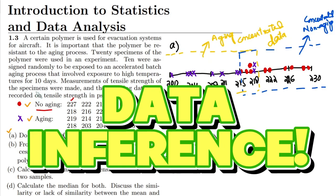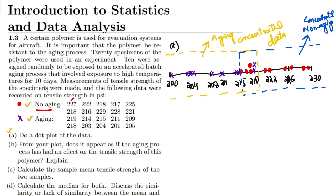Welcome back guys. This is again question 1.3. Previously we have seen the dot plot of our data, which is in the form of non-aging and aging samples of a certain polymer. This is the data, and in part a we have not only plotted it but I also explained the aging process, which basically involves the decrease in tensile strength of the polymer.